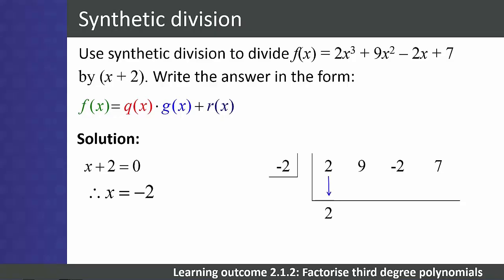Multiply the number that was brought down by the number in the division box and write the answer in the next column. 2 multiplied by -2 is -4. Add the numbers in the second column and write the answer below the line. 9 + -4 is 5. Multiply this result by the number in the division box and write the answer in the next column. 5 multiplied by -2 is -10. -2 + -10 is -12. Continue in this way to complete the calculation.